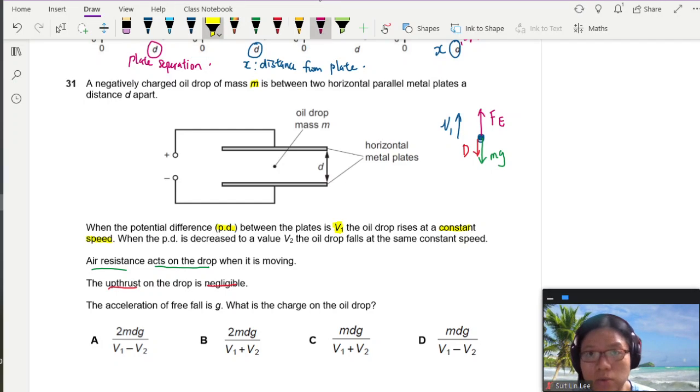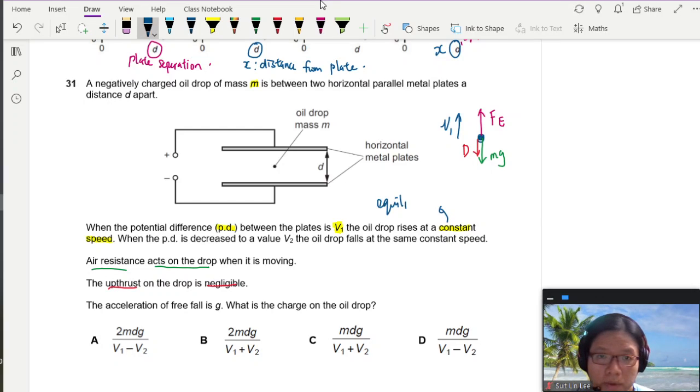So the keyword here would be constant speed. Constant speed here would mean that your force is in equilibrium. Equilibrium, net force is zero. So we're going to write a force equation for this case. You will have the up force, Fe, will be equal to D plus mg.